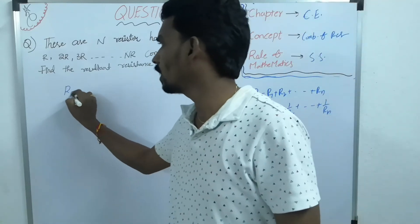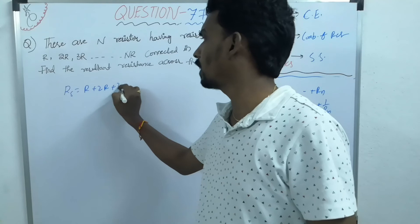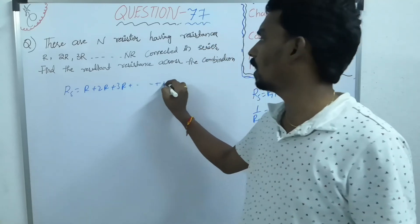So what is the resultant resistance? R plus 2R plus 3R plus so on, nR.